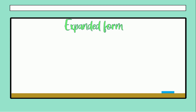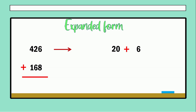Let's continue with the next case — here we have expanded form. If you want to see the video about how to represent numbers, you can see the link in the description. We have 426 plus 168. First we have to locate the numbers: 6 is in the units, 2 has one zero because we have 2 in the tens, and for the hundreds we have 4 with two zeros. For the second number: 8 in the units, 60, and 100.